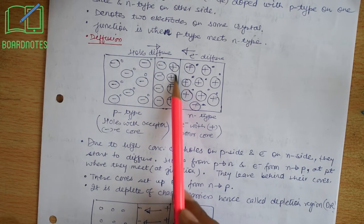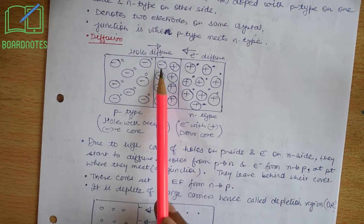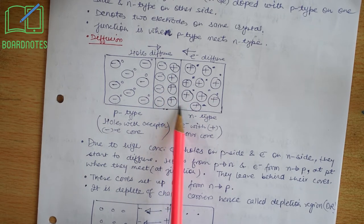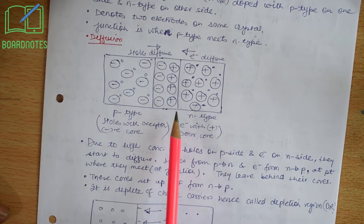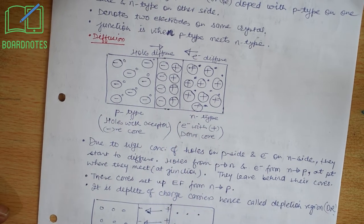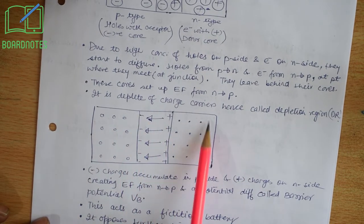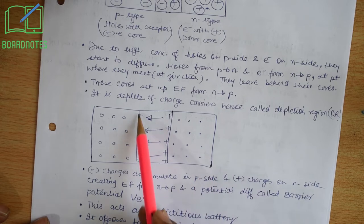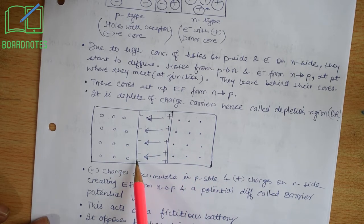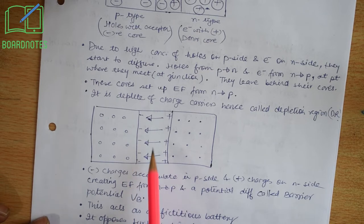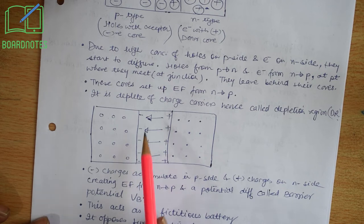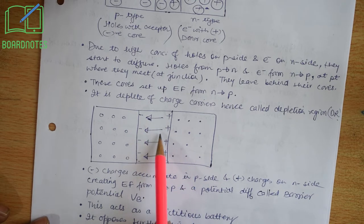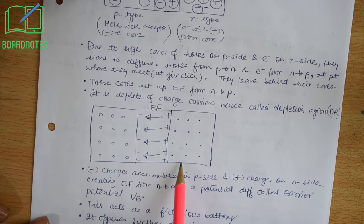This is the depletion region. Negative cores accumulate on the p-side and positive cores accumulate on the n-side, thereby creating an electric field. An electric field is generated from n-side to p-side. This region is called the depletion region because charges are depleted — the holes and electrons have recombined, leaving behind their cores: negative on the p-side, positive on the n-side. This electric field goes from n-side to p-side.